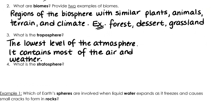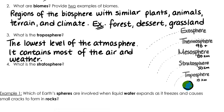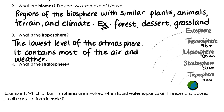The troposphere is the lowest level of the atmosphere. It contains most of the air and weather. The troposphere extends upward to about 10 kilometers above sea level. We humans live in the troposphere and nearly all weather occurs in this layer. Most of the clouds appear here mainly because 99% of the water vapor in the atmosphere is found in the troposphere.